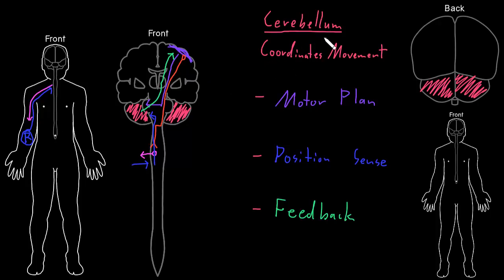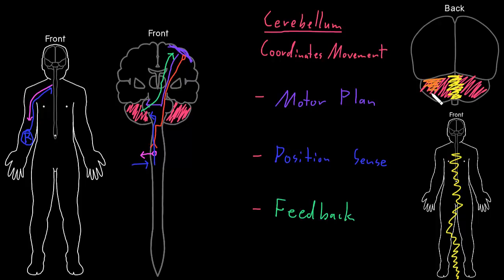Without getting too deep into the anatomy of the cerebellum, one detail about how it's set up is that the middle part of the cerebellum, toward the midline, tends to mostly coordinate movements involving the middle of the body — and in particular, walking. So the muscles of the trunk and the legs involved in walking get a lot of coordination from the middle of the cerebellum. While the part of the cerebellum more on the side — farther over to the side of the cerebellar hemisphere — is more involved in coordinating movements of the limbs, such as the arms and legs when they're being used individually.